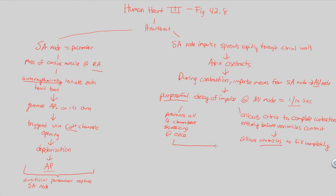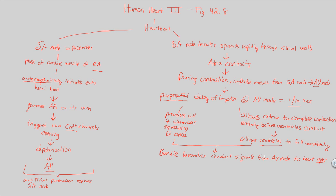After this purposeful delay has been completed, the rest of the heartbeat propagates via specialized structures of the heart. Those structures include the bundle branches — very specialized parts of the heart that continue moving the signal from the AV node to what is known as the heart apex. The heart apex is the very bottom part of the heart, where the next movement of this impulse occurs.